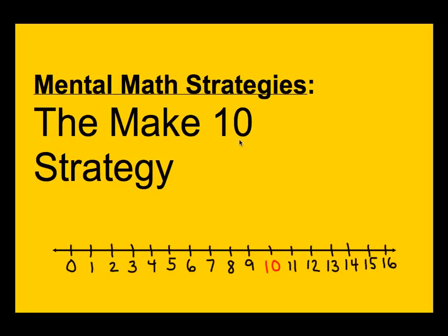As you can see, there's a number line down here. As the name implies, it is important that the goal is to first make 10. Typically you'll be given any number below 10 and you'll be given a number to add to that.